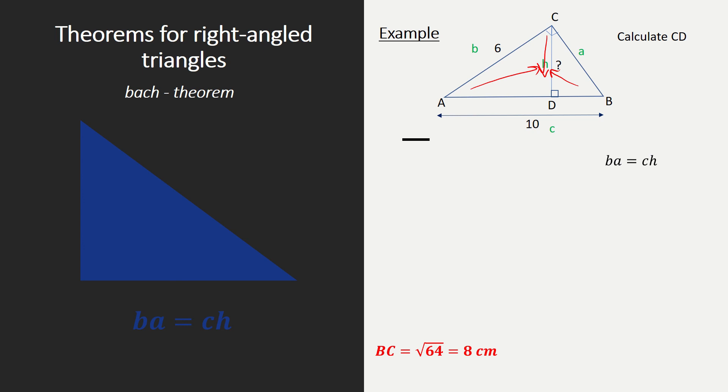Let's fill this in with letters according to our triangle. So AC times BC equals AD times CD. Then you're going to fill everything in that you know. So 6 times BC equals 10 times CD. And again, we miss some information.